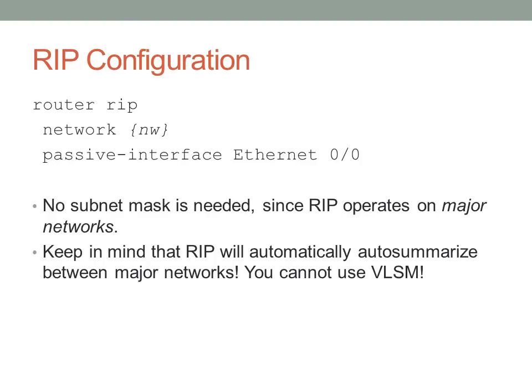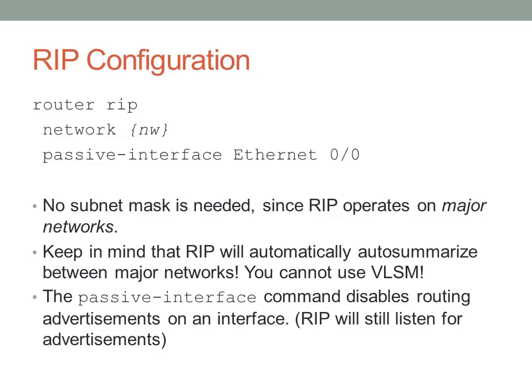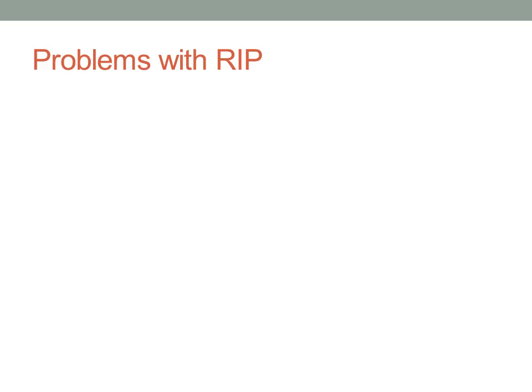Keep in mind that RIP will automatically summarize between major networks. You can't use variable length subnet masking with RIP. The passive interface command disables routing advertisements; however, RIP will still listen for advertisements coming inbound on those interfaces.